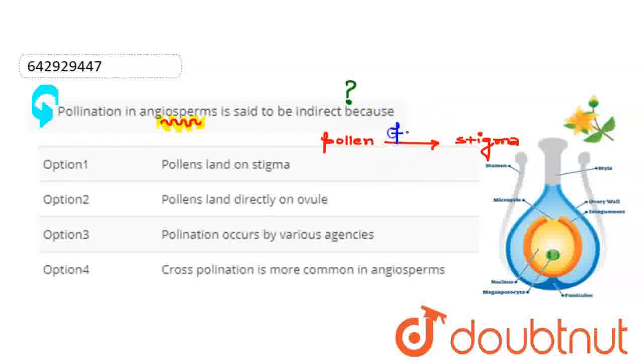So let's see, the first option we have given here is pollen land on stigma. Yes, the appropriate answer here is first, because as we discussed about indirect pollination.